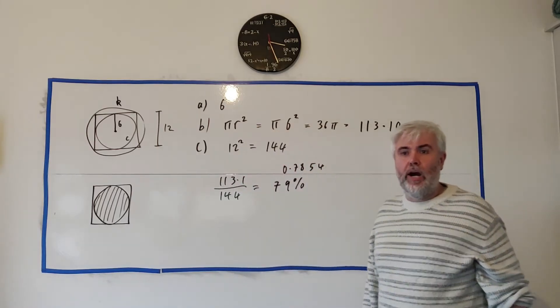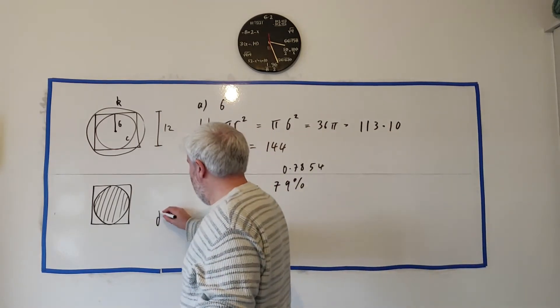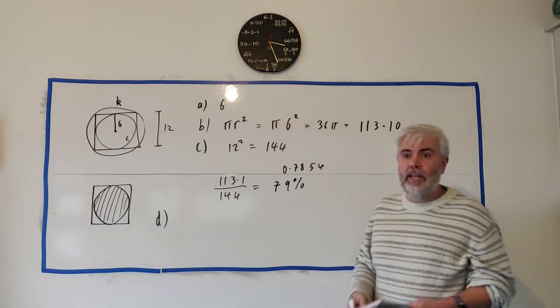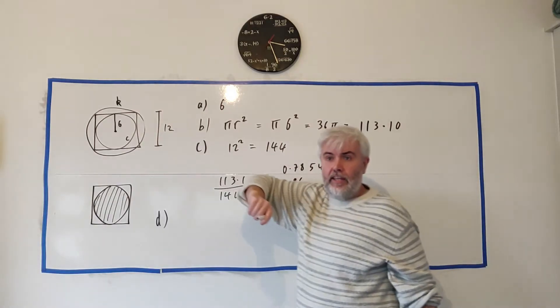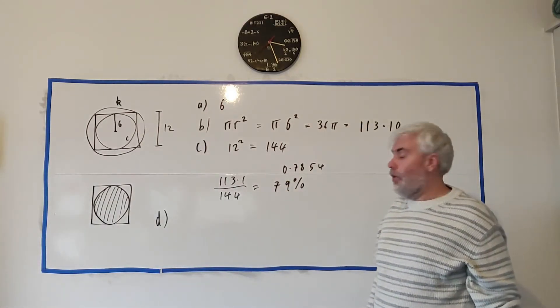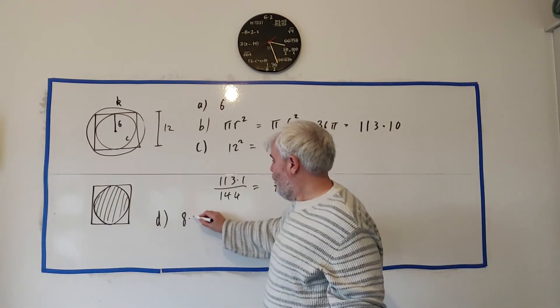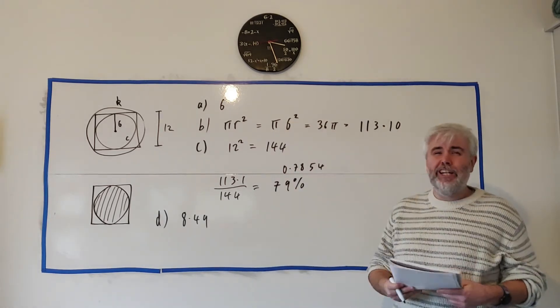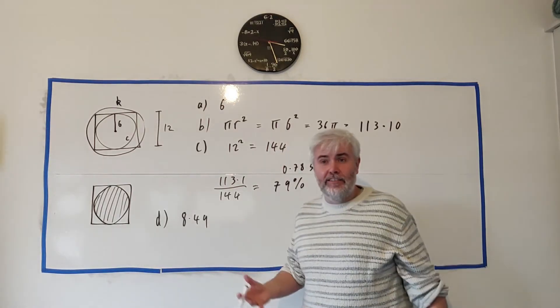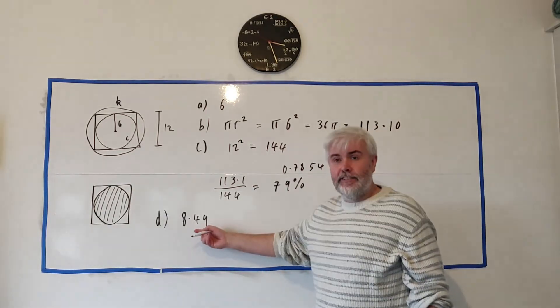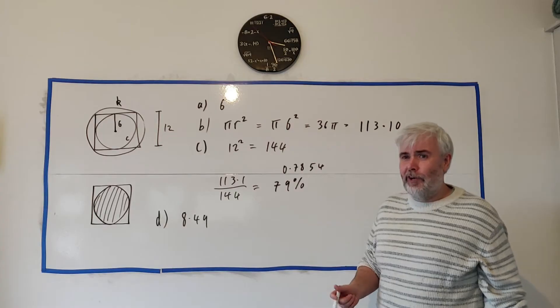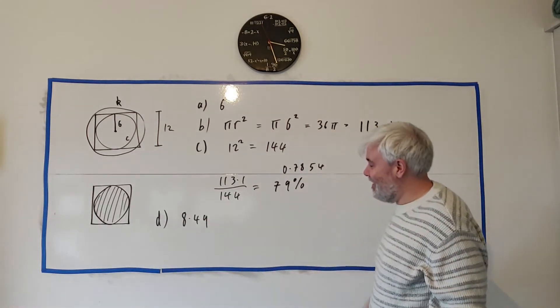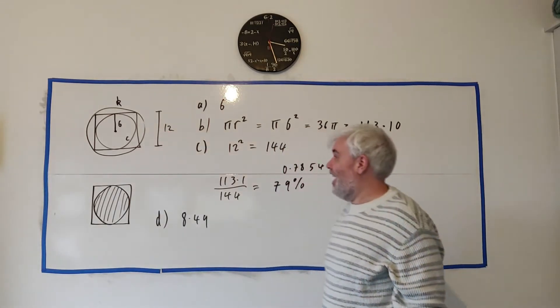Okay on to part D. Part D they actually give us the answer. They tell us that the radius of the bigger circle, circle K, is 8.49 and they ask you to show that. Really what that means is find it, but I don't trust that you will get it right so I'm going to give you the answer so you can do the next part. Basically find the radius of circle K.